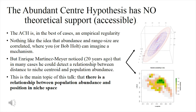Enrique Martinez-Meyer noticed this about 20 years ago, although he published just seven years ago — that in many cases what matters is not the distance to a geographic centroid but the distance in niche space, as you can see in the graphs. There seems to be a relationship between the distance to the centroid of the niche model — represented as an ellipsoid — and abundance in geographic space. This is the main topic of this talk: the relationship between population abundance and position in niche space.